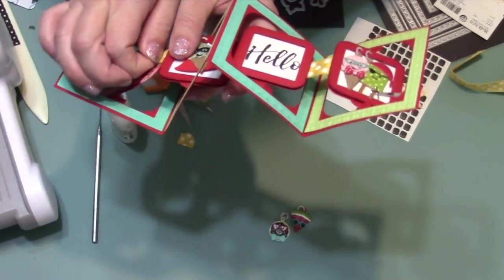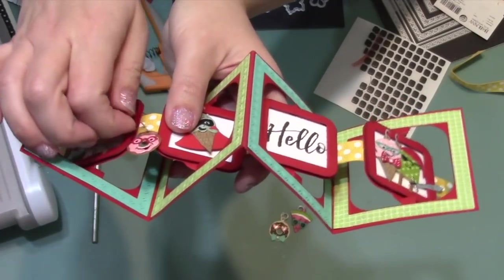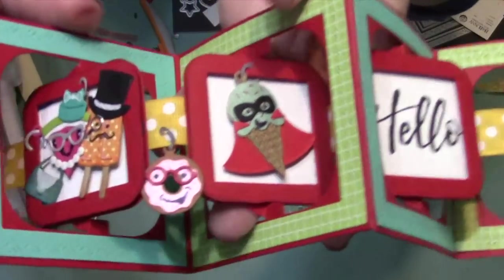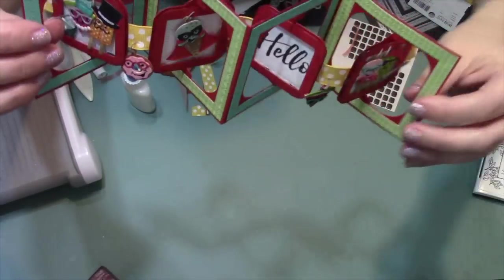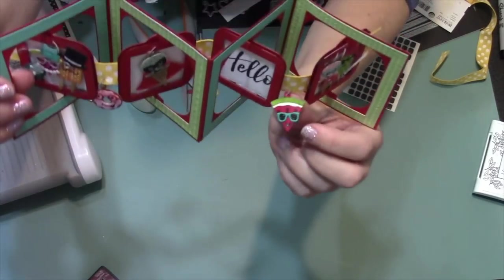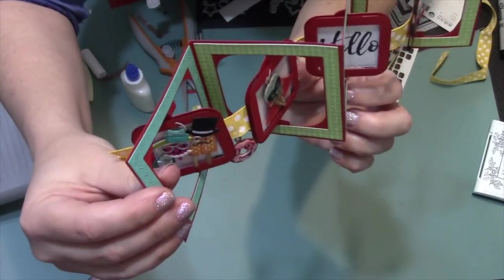So that they will seal together and trap that charm on the ring, and it can't fall off as you open and close the card. Then I just repeated that process to hang my other two charms. So I have the watermelon charm right here, and then back here between the pages 2 and 3, I've got that final little donut charm.